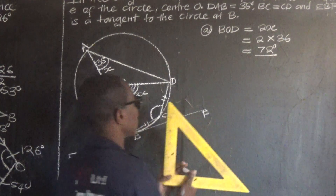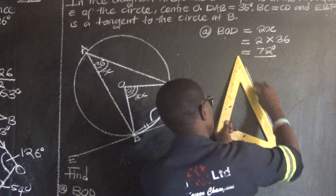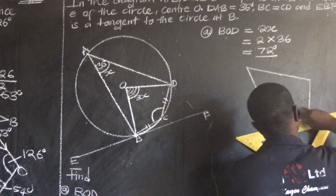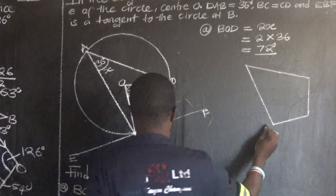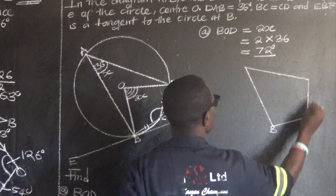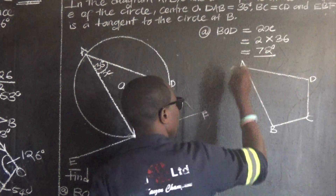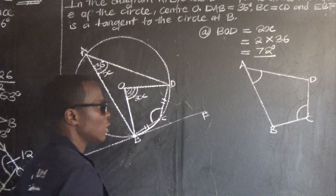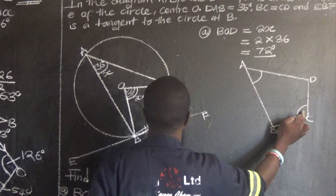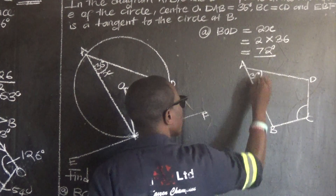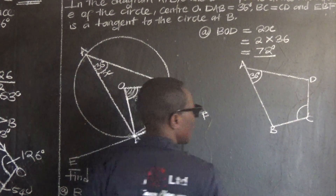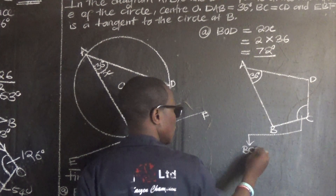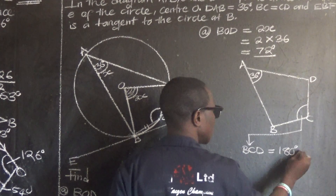Since these four points lie on the circle, they form a cyclic quadrilateral. The cyclic quadrilateral is formed by the four points A, B, C, and D. Opposite angles of a cyclic quadrilateral are supplementary — they add up to 180 degrees. So this angle plus the opposite angle equals 180 degrees, and this angle is 36 degrees.